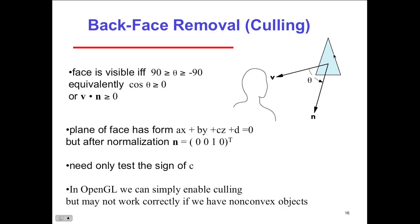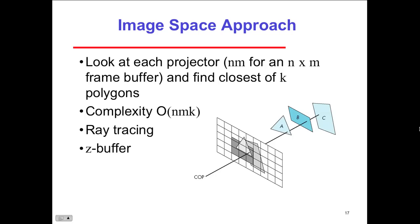If you rotate a culled object you'll see blackness — it'll be missing. In OpenGL we can simply enable culling, but it may not work correctly with non-convex objects. The image space approach looks at each projection for the n×n frame buffer and finds the closest polygon — increases complexity. This can be used with ray tracing and Z-buffering. We're essentially looking at the projection and getting whichever polygon is closest, then layering the ones that pile on top.